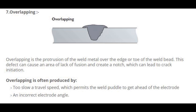Number 7: Overlapping. Overlapping is the protrusion of the weld metal over the edge or toe of the weld bead. This defect can cause an area of lack of fusion and creates a notch which can lead to crack initiation. Overlapping is often produced by too slow a travel speed, which permits the weld puddle to get ahead of the electrode, and an incorrect electrode angle.